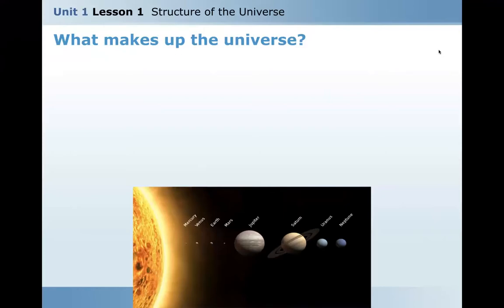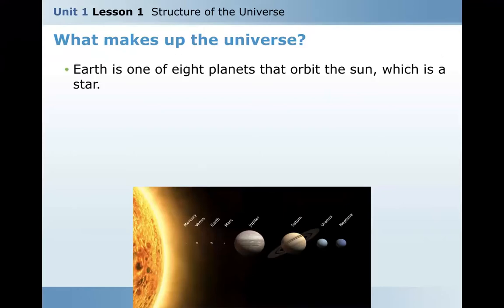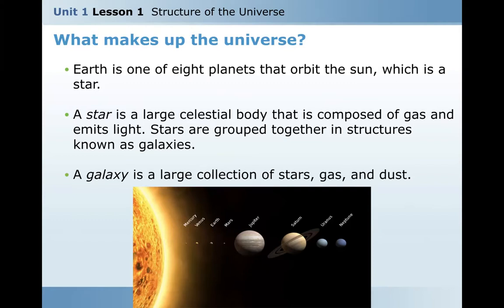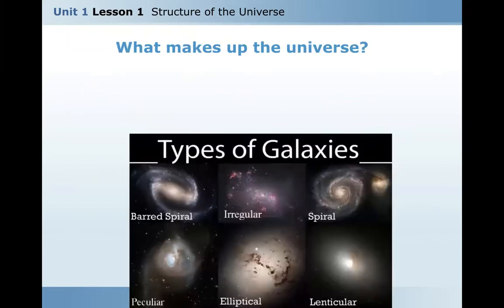What makes up the universe? We're going to start out with the local community. Earth is one of eight planets that orbit our sun, which is a star. A star is a large celestial body that is composed of gas and emits light and heat energy. Stars are grouped together in structures known as galaxies. A galaxy is a large collection of stars, gas, and dust.